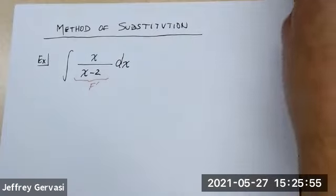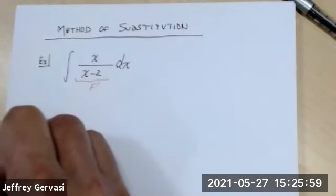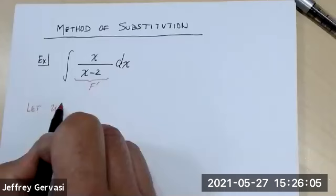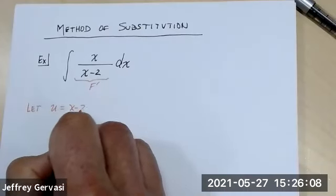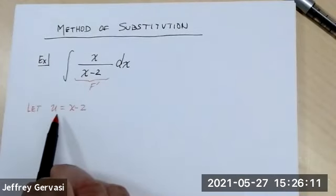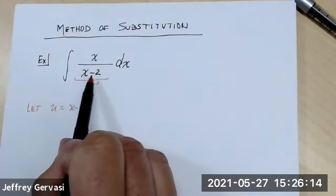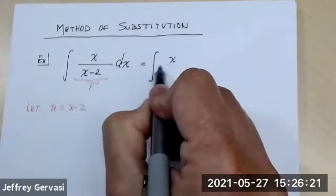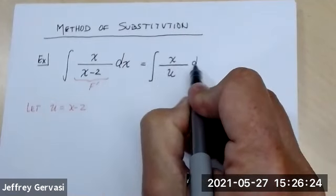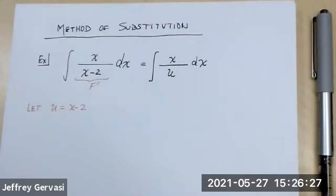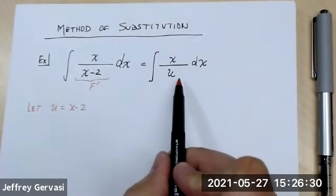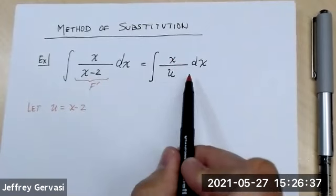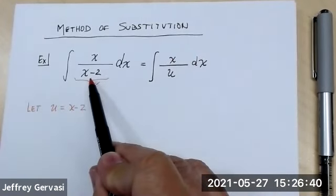Here's how it works. I'm going to let the letter U represent one part of the integrand. I'm going to say let U equal X minus two. So the letter U is going to take the place of the denominator. Now, you can't mix letters like this, so we're going to transform the entire integral over to one that contains just the letter U. Now that I've replaced the denominator, I need to replace the numerator X and the differential of X.